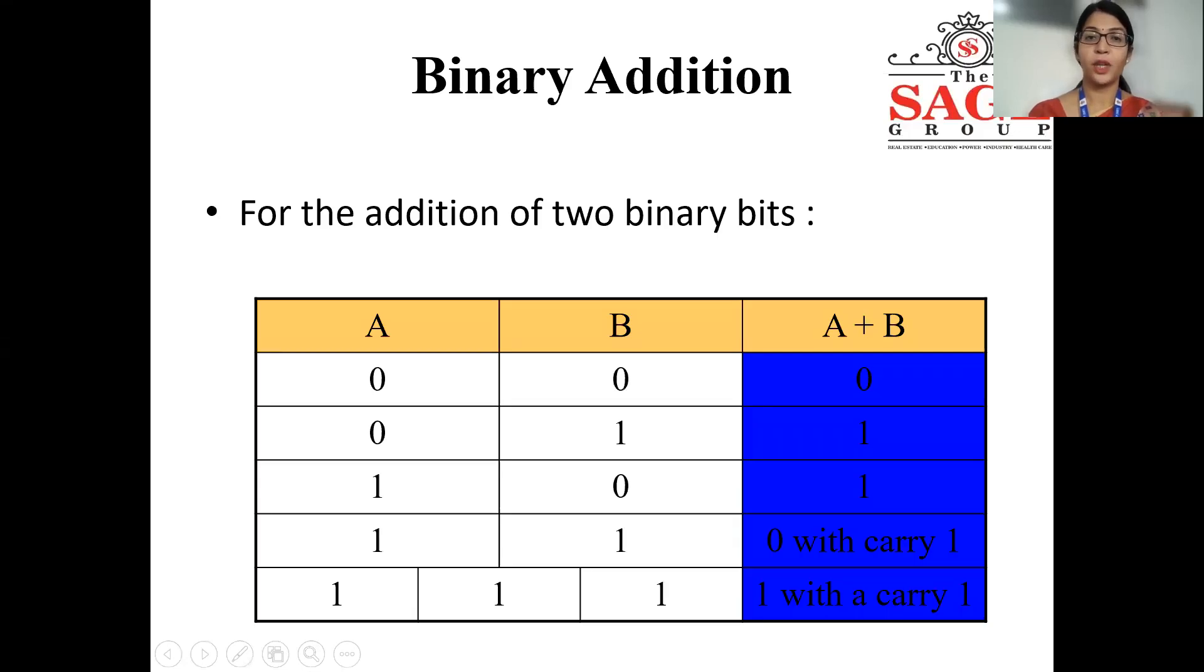First operation is addition operation. To perform the addition of two binary bits, let us suppose A and B as two binary bits which need to be added. So, 0 plus 0, you will get result as 0. 0 plus 1 is 1. 1 plus 0, the sum will be 1. 1 plus 1, sum will be 0 with a carry 1. 1 plus 1 plus 1, the result will be 1 with a carry 1.